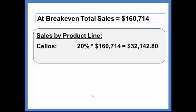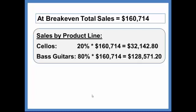On the other hand, bass guitars are 80% of sales. So we will compute 80% times $160,714 and we find that sales of bass guitars must be $128,571.20. So this is the breakdown of the $160,714. Notice that that will total out to be your breakeven point, but this is just specific to each product line.